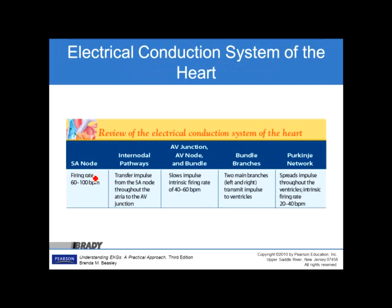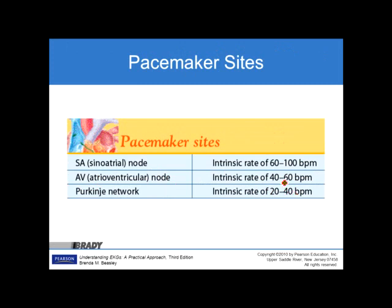The primary pacemaker site is the sinoatrial node. The secondary pacemaker site is the AV node, and the third is the Purkinje network or ventricular muscle. Intrinsic rates are: SA node 60 to 100, AV node or junctional rhythms 40 to 60, and ventricular muscle 20 to 40. Notice that as we go lower in the heart, the rate goes lower as well.